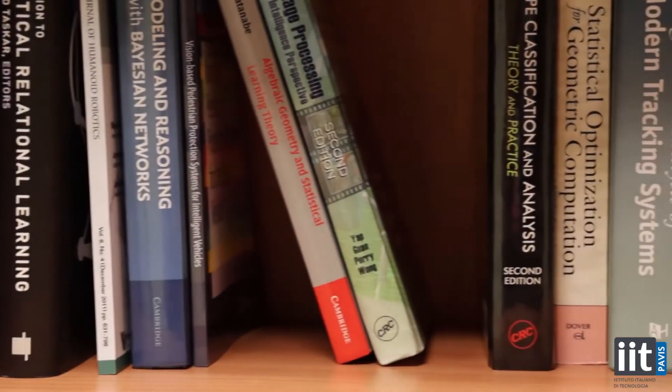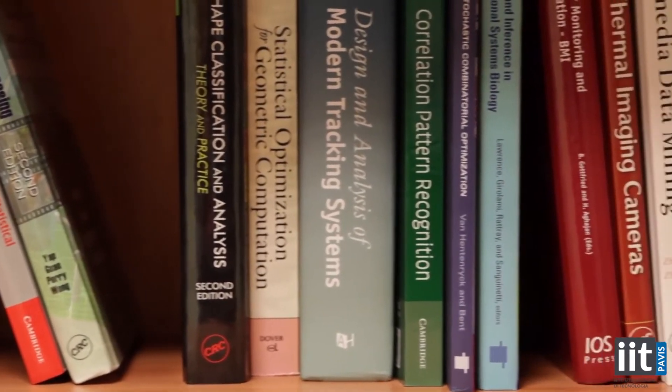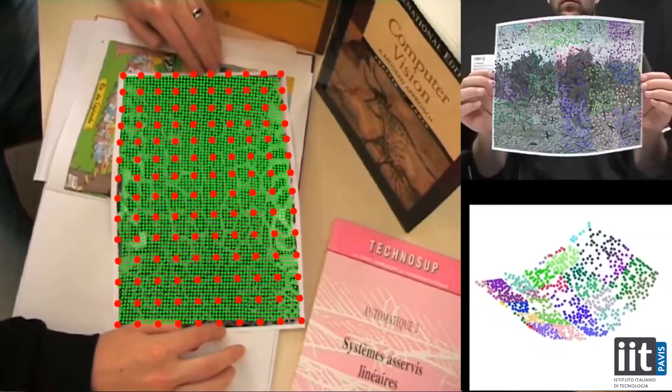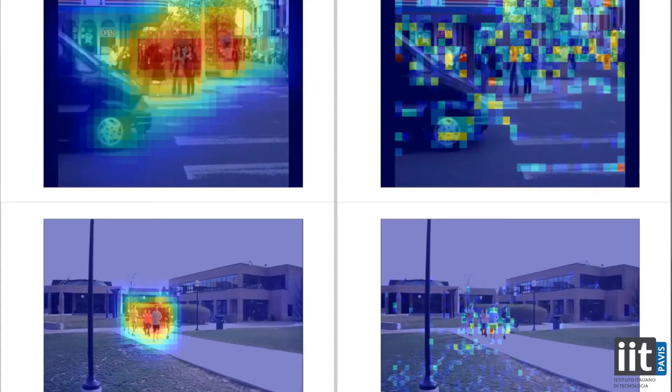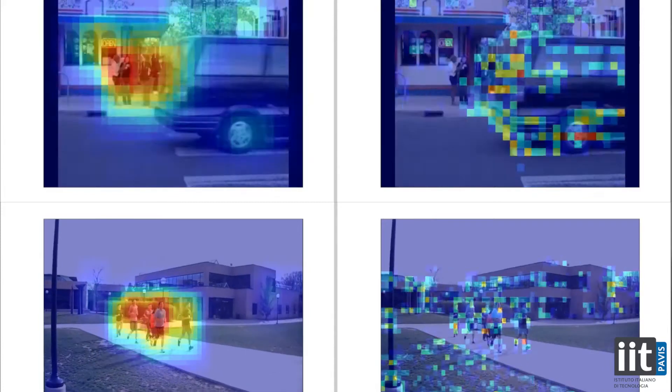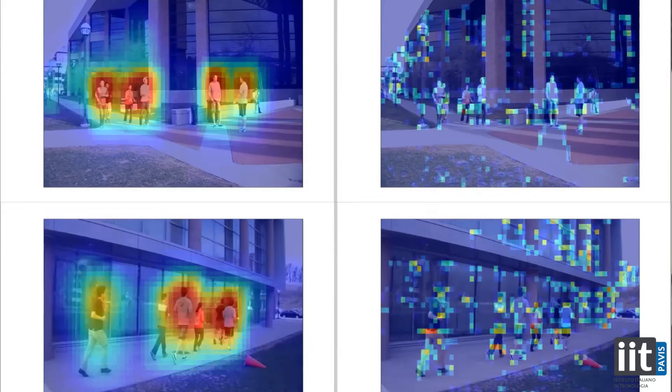The Pattern Analysis and Computer Vision department, PAVIS, deals with activities in computer vision, pattern recognition, and machine learning. Our research addresses several real-world applications dealing with image and video analysis, recognition, and understanding by designing methods grounded by solid mathematical theory. Our main applicative scenarios are related to video surveillance, security, and biomedical image analysis.